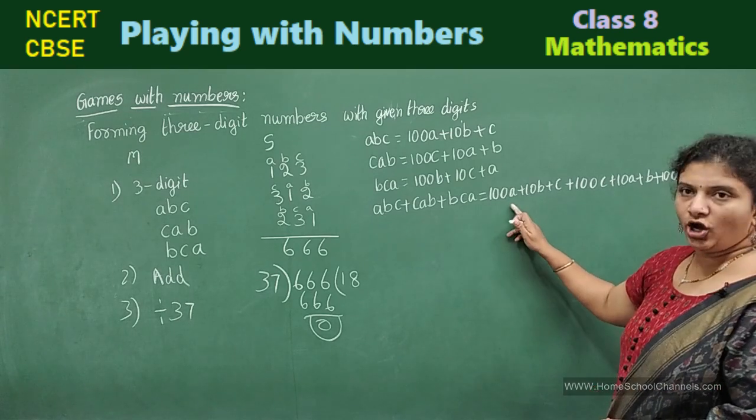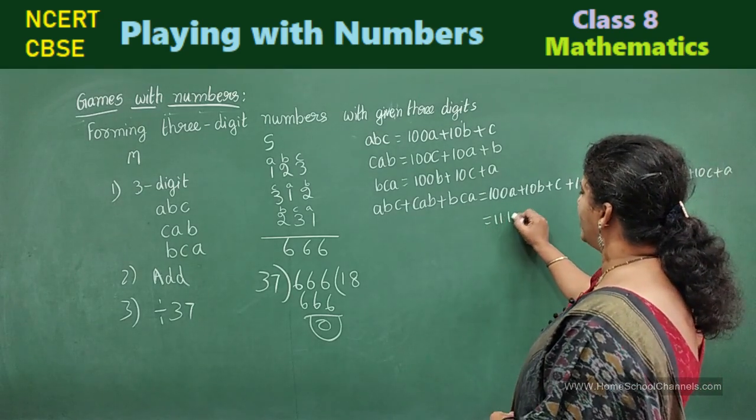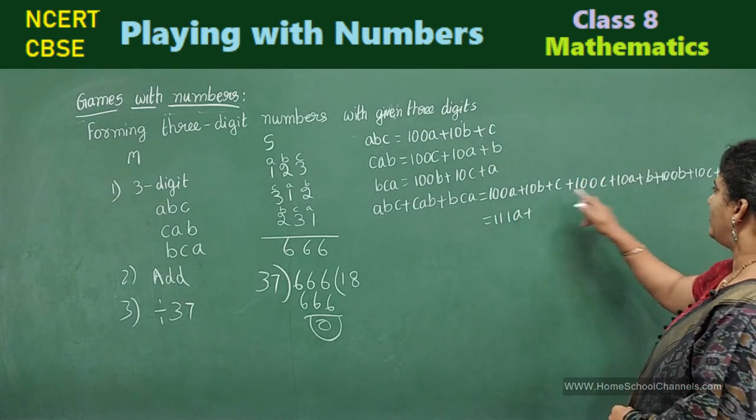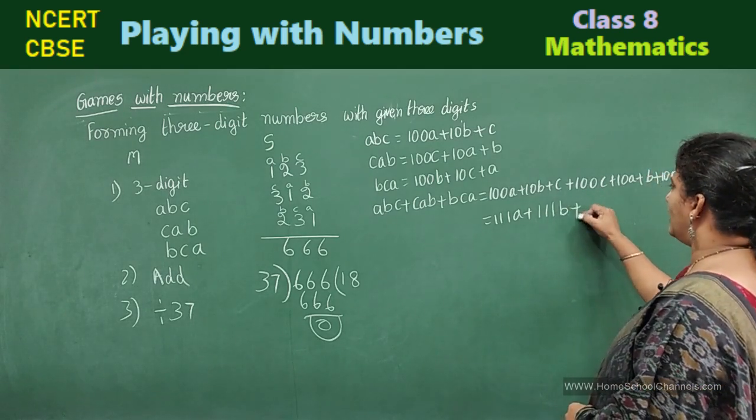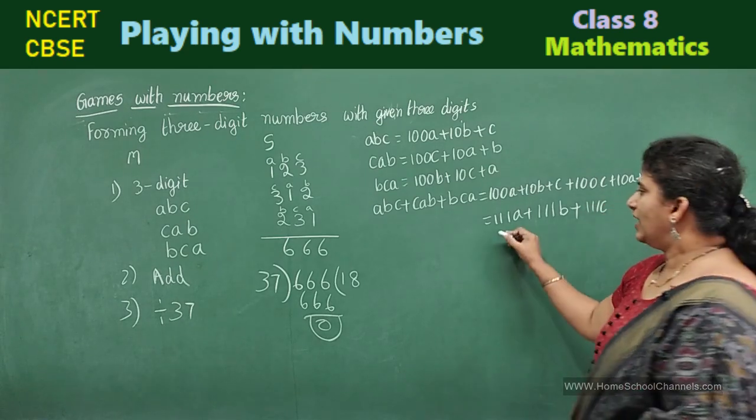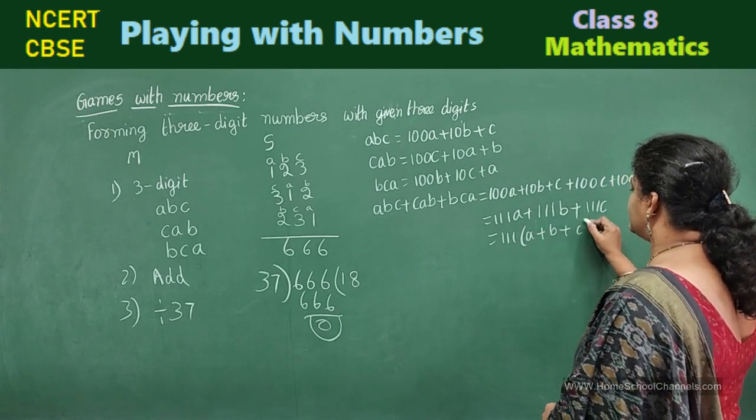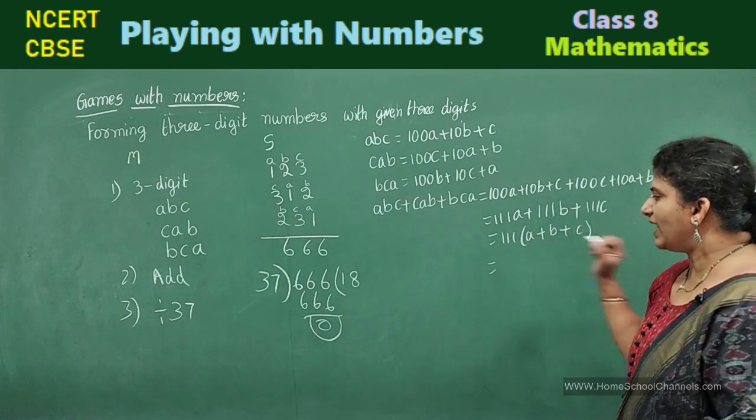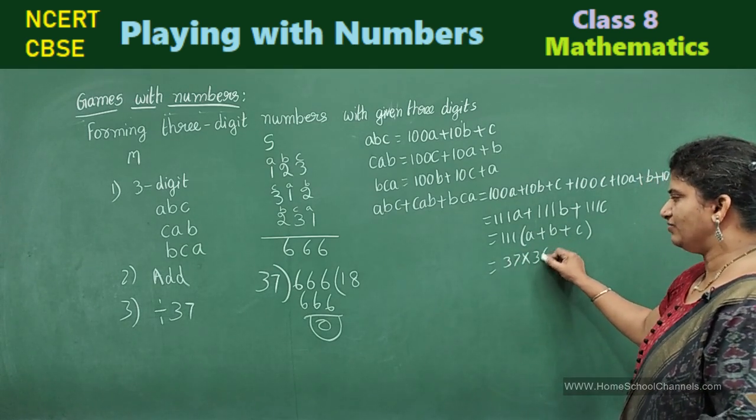Now, add all A's. 100A, 10A, A. It will be 111A. 10B, B, 100B, 111B, and again all C's if you add, 111C. Now, take out common. 111 is common, A plus B plus C. This 111, I can split it as 37 three times.